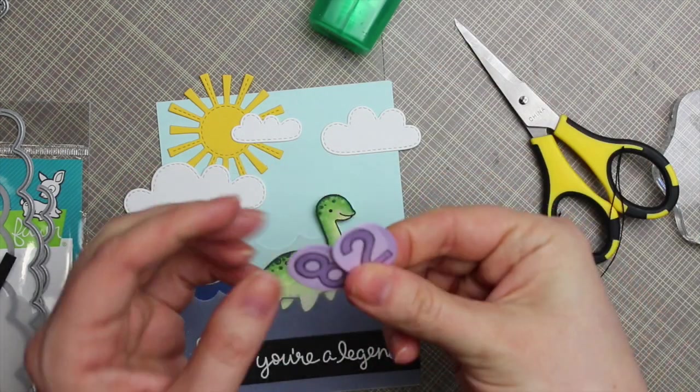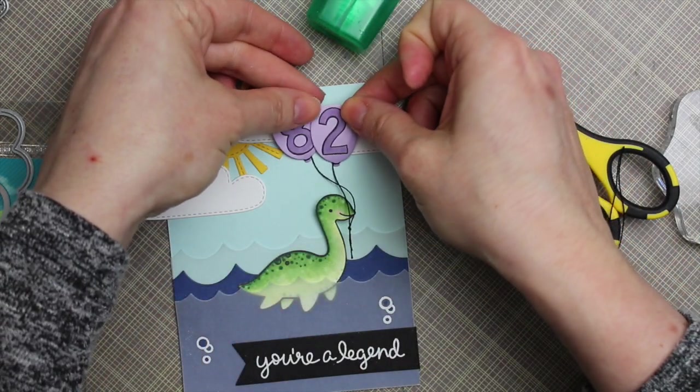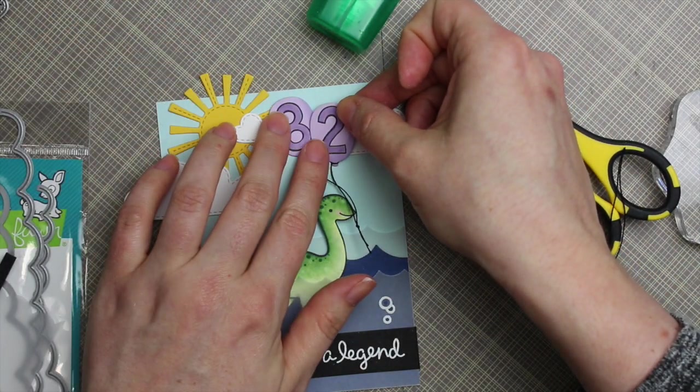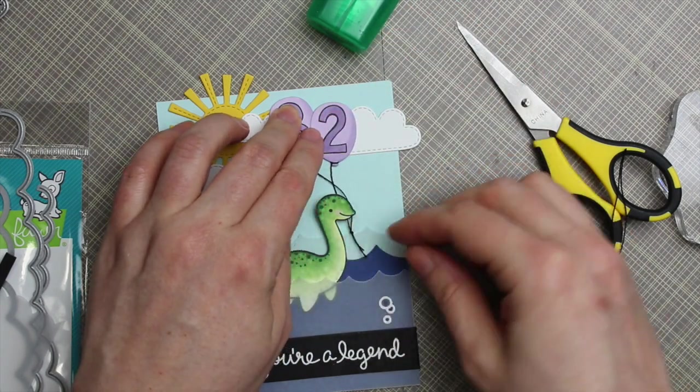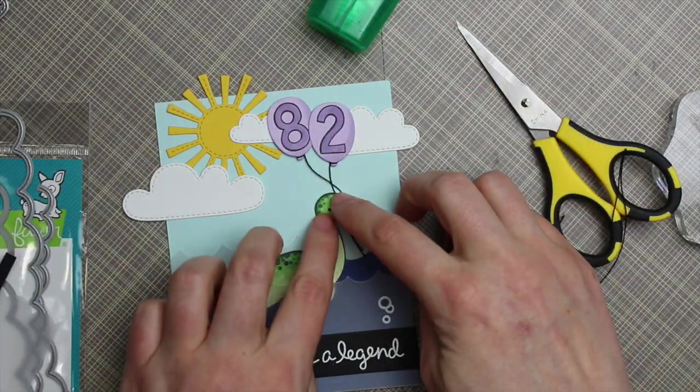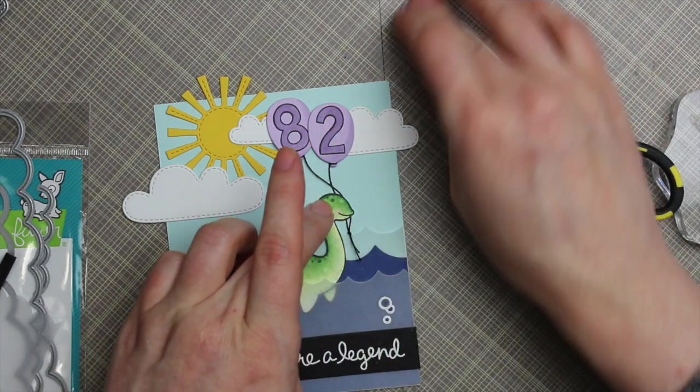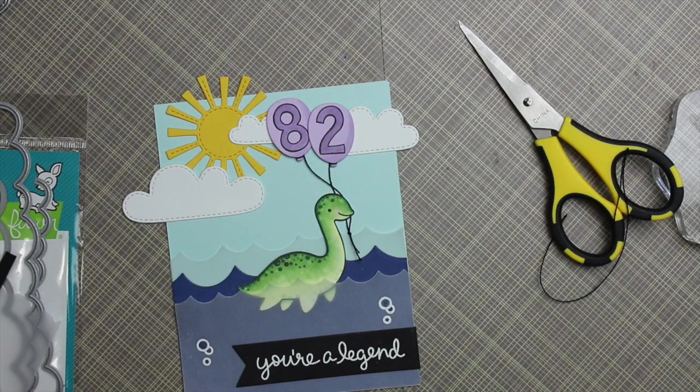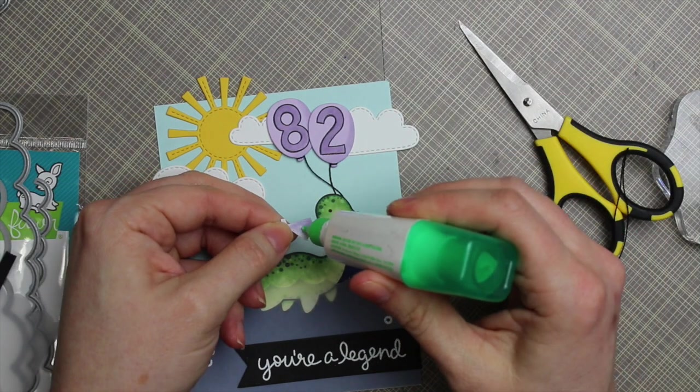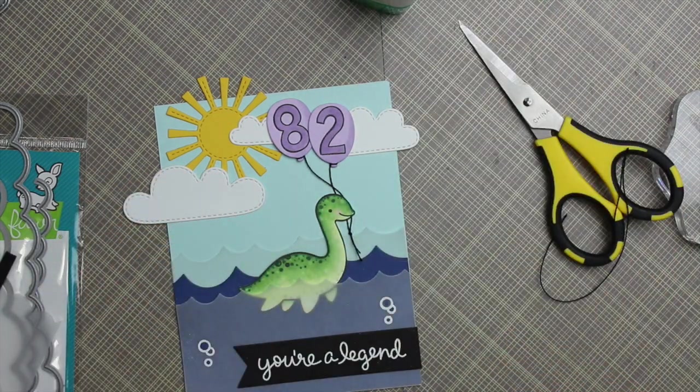And then I adhered those flat to the card front as well. And then kind of tucked the string behind the little Loch Ness monster's head to kind of make it look like he's holding on to these fun little balloons. And then once that's adhered, I'm going to adhere that little birthday hat that I had stamped and colored and then cut out. So a little bit more adhesive for that.